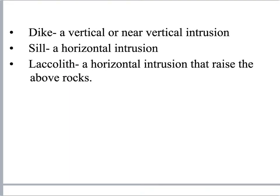Dikes and sills are among the smaller intrusive features. Laccoliths are a little bit larger than a sill. A dike is a vertical intrusion — vertical or near-vertical at an angle — and it cuts across rock layers. Sills are horizontal and lay right in between two different rock layers. A laccolith is a horizontal intrusion like a sill, only too much magma was forced in, causing the upper rock layers to bend upward, creating a little hill.